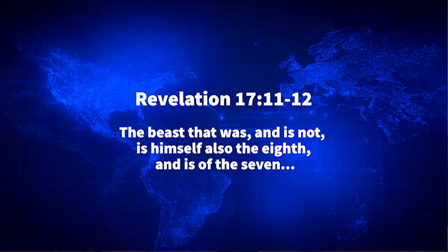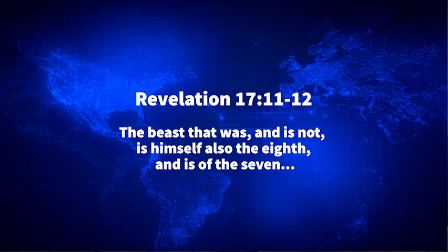Continuing in Revelation 17 verses 11 and 12: 'The beast that was and is not' — speaking of the seven-headed beast, all seven kingdoms having come and gone. 'The beast that was and is not is himself also the eighth and is of the seven.' That is a very important statement because it shows us that the eighth and final world-ruling empire is going to be a resurrection of one of the previous seven.